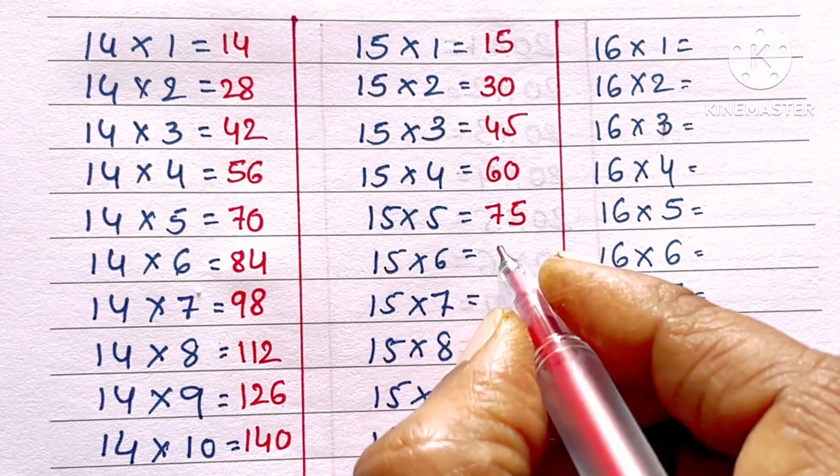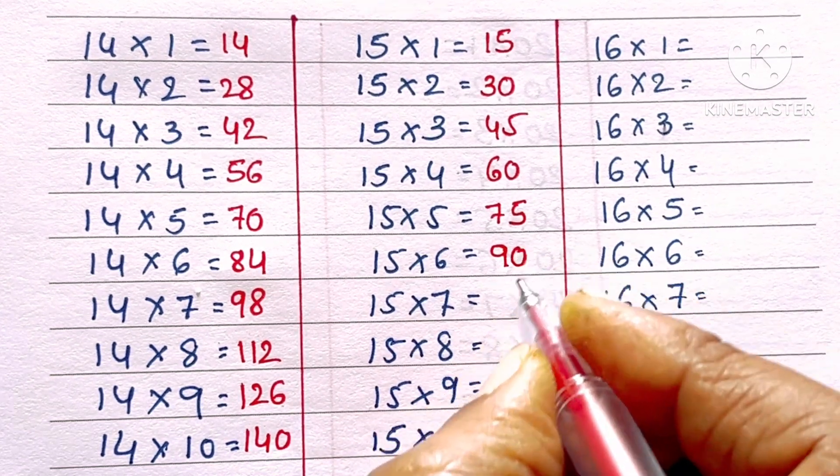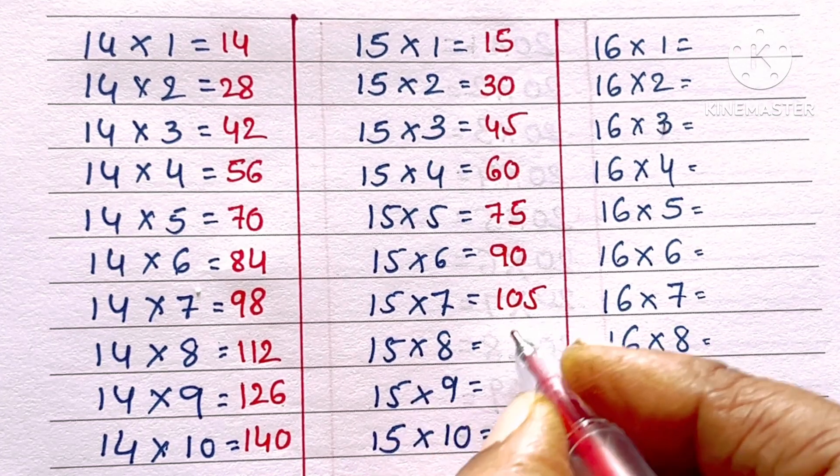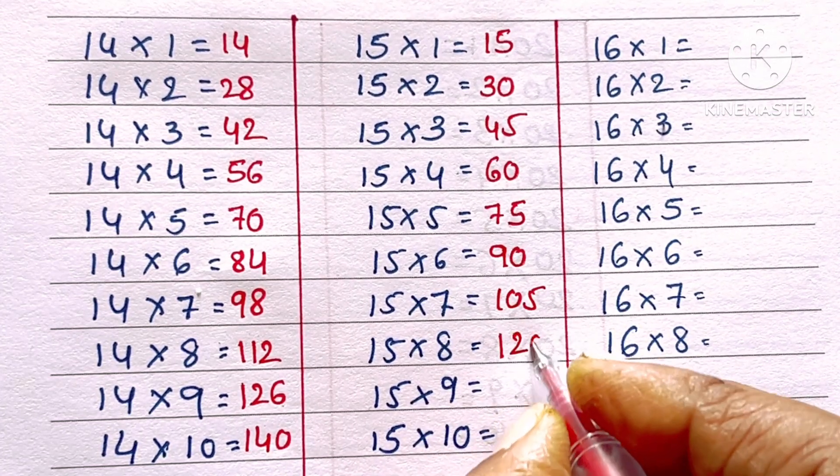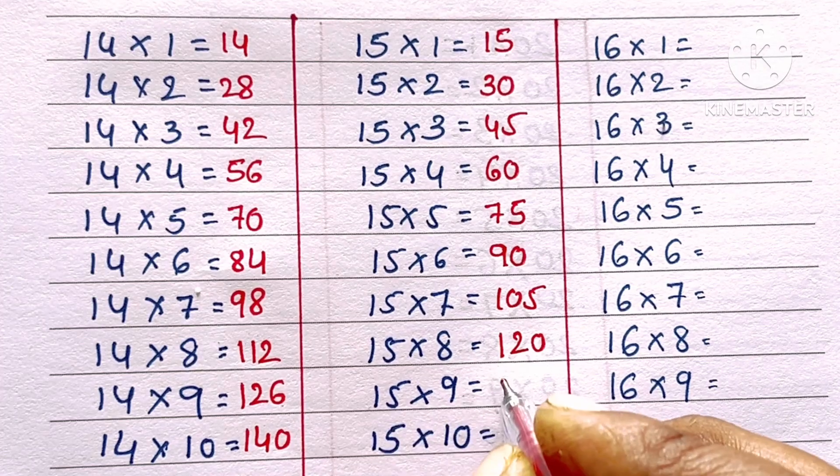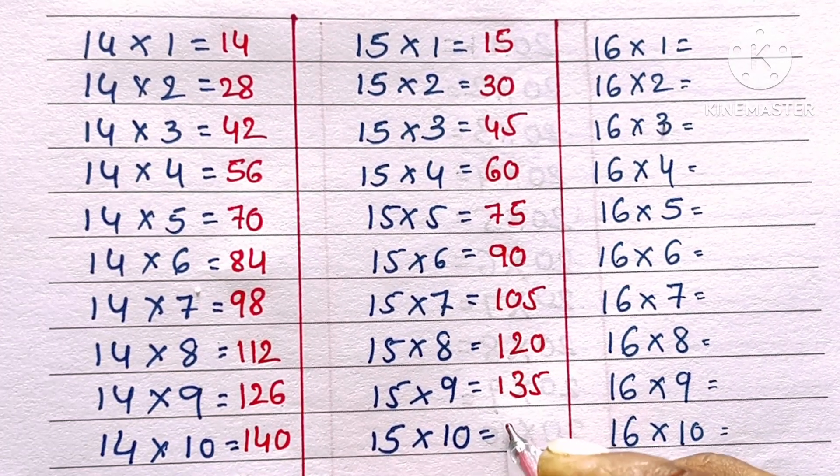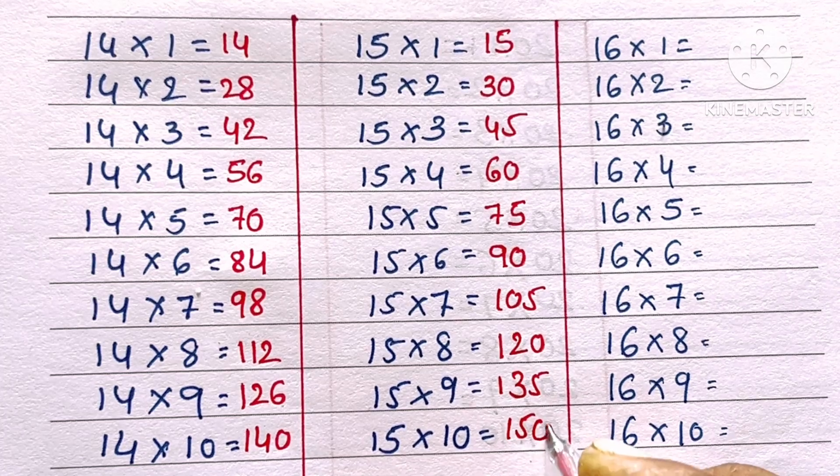15 sixes are 90, 15 sevens are 105, 15 eights are 120, 15 nines are 135, 15 tens are 150.